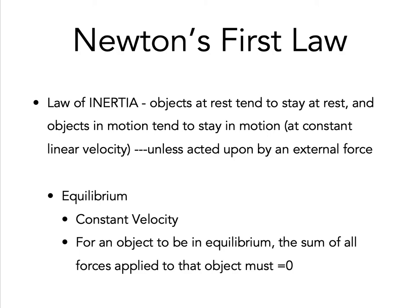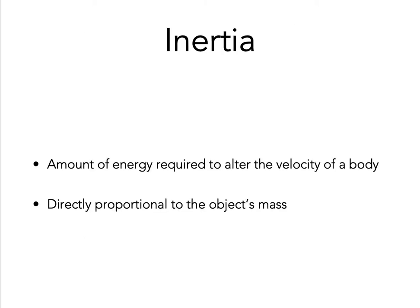Equilibrium equals constant velocity, and for an object to be in equilibrium, the sum of all forces on that object must be equal to zero. Inertia can be viewed as the amount of energy required to alter the velocity of the body — it's directly proportional to the object's mass. For example, more energy is required to speed up or slow down a moving 7 kg dumbbell as opposed to a 5 kg dumbbell.